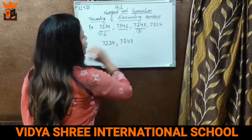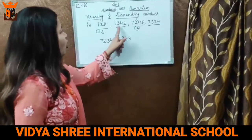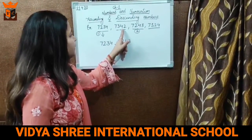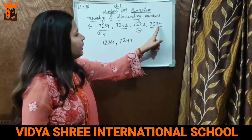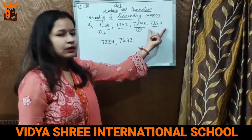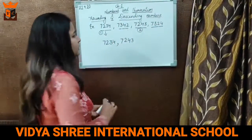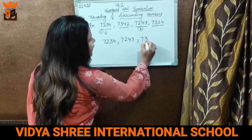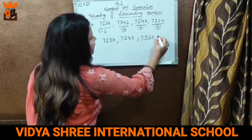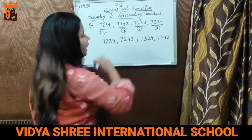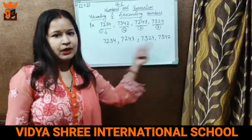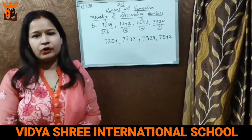Now compare 7342 and 7324. Similarly, on the hundredth place in both numbers 3 is there, so we will compare them from the tens place. Here on the tens place there is 4 and here is 2. Now 4 is always bigger than 2, so which one is smaller? 7324 is smaller than 7342, so we will write 7324 third and the fourth number is 7342. We can see these numbers are arranged from smallest to greatest, so this is called the ascending order of numbers.